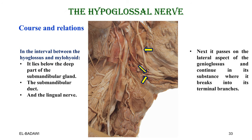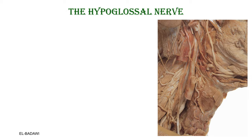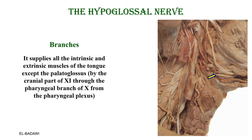The hypoglossal nerve then passes lateral to the genioglossus and continues into the substance of the tongue, where it breaks into its terminal branches. It supplies all intrinsic and extrinsic muscles of the tongue except the palatoglossus, which is supplied by the cranial part of the accessory through the pharyngeal branch to the pharyngeal plexus.